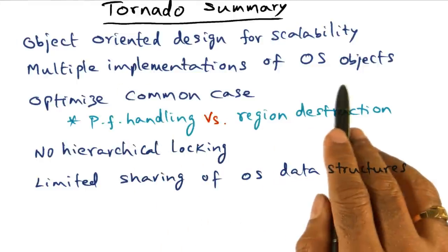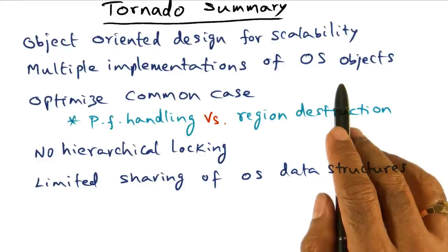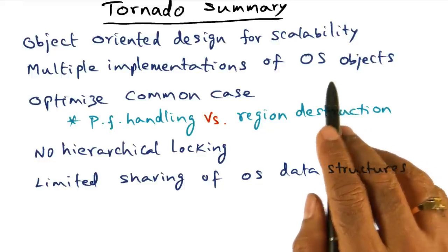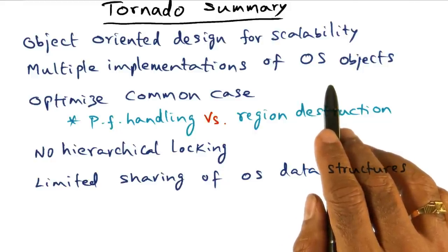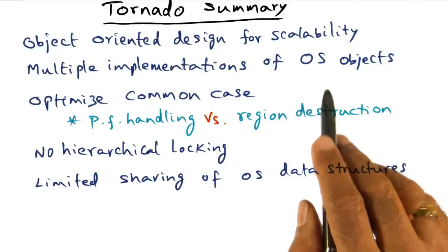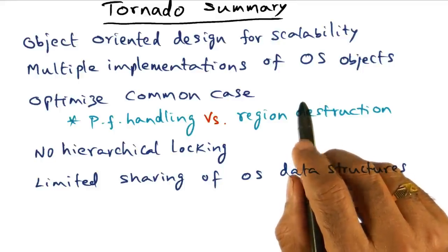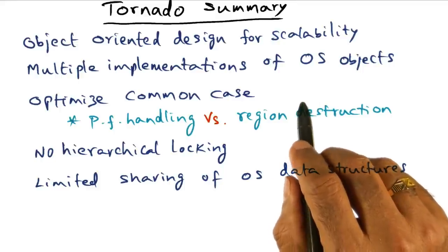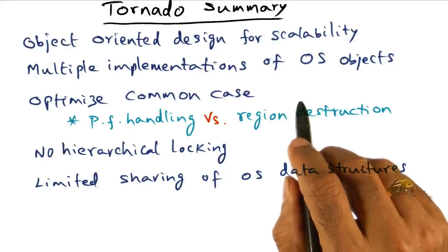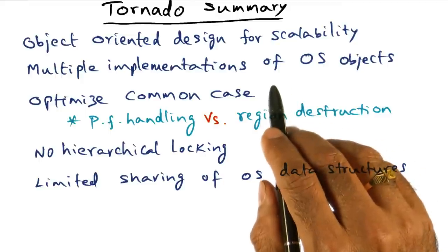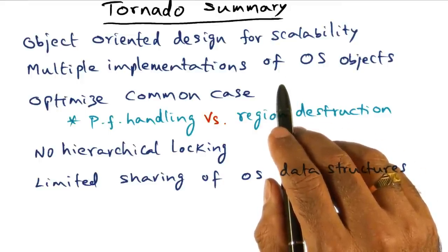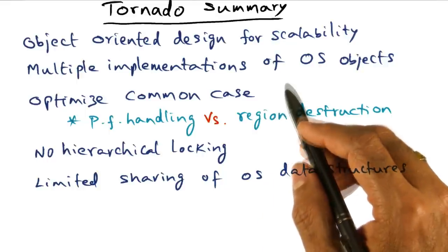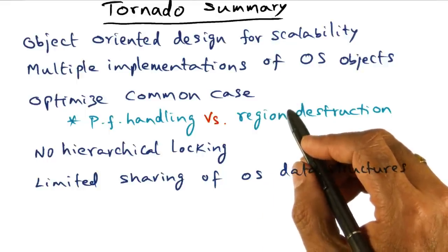Multiple implementations are possible for the same operating system object. For instance, you may have a low overhead version when scalability is not important. But if you're experiencing a lot of contention for a particular operating system object, you might want to go for a more scalable implementation. This is where incremental optimization and dynamic adaptation of the implementation of objects comes into play.